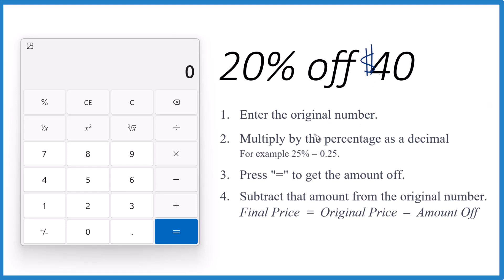So, we enter the original number. That's the 40. Then we multiply by the percentage as a decimal. So, 20% becomes .20, or you could just call it .2.